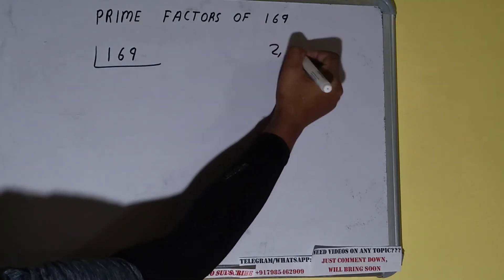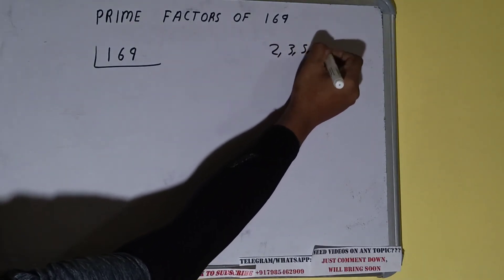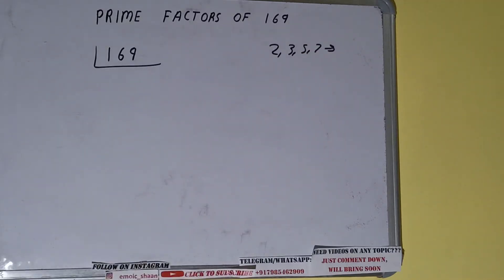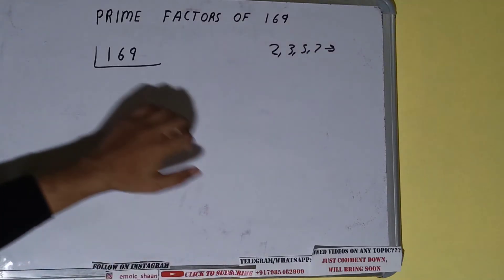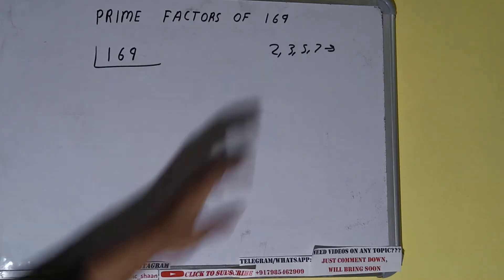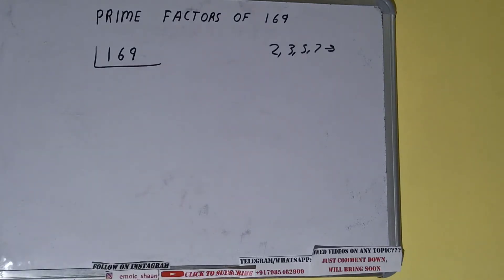We'll check with the lowest prime number we have, that is 2. Is the number 169 divisible by 2? Clearly not, because the number is odd. So we'll be going to the next lowest prime number.